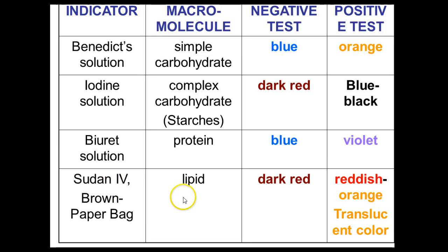For Sudan 4, it'll be dark red, but for a positive test you'll have reddish-orange globules — globs of oils and fats sitting on top. For the brown paper bag test, you'll see a translucent color on the paper bag in the presence of lipids.